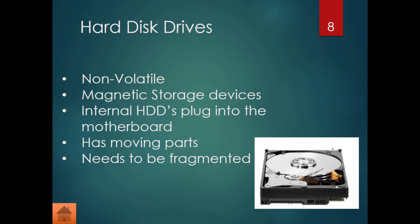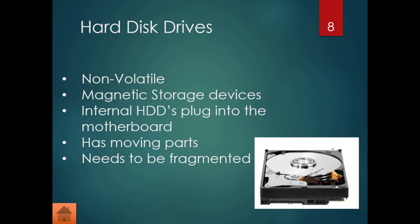A traditional hard disk drive has multiple disks inside with an arm reading off them. It is non-volatile, meaning information is kept even when power is off. It is a magnetic storage device. Internal hard drives plug directly into the motherboard, and unlike SSDs, they have moving parts and need to be defragmented from time to time.